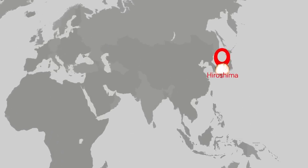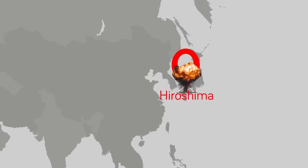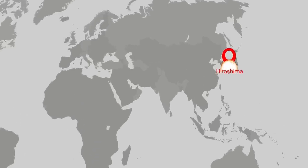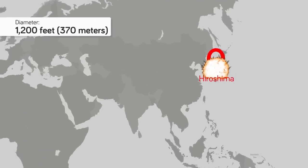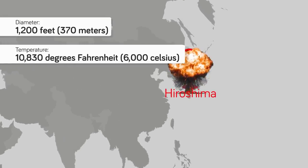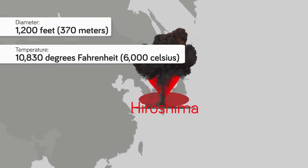37. The fiery blast from a nuclear bomb is the result of local air being superheated by X-rays and sending out a pressure wave in all directions. 36. The fireball from the Hiroshima bombing was 1,200 feet in diameter and had a surface temperature of 10,830 degrees Fahrenheit. That's hotter than the surface temperature of the sun.